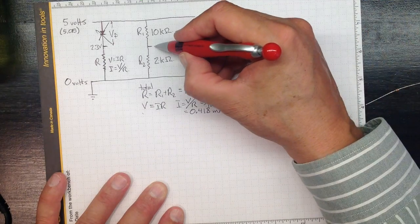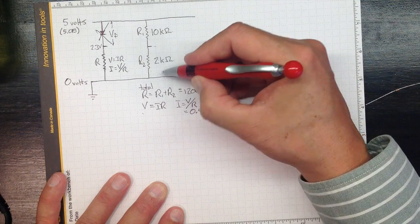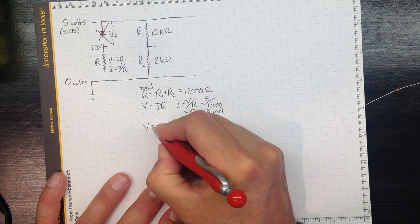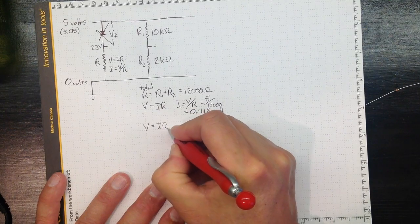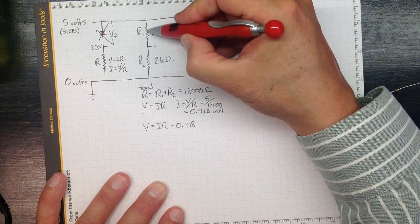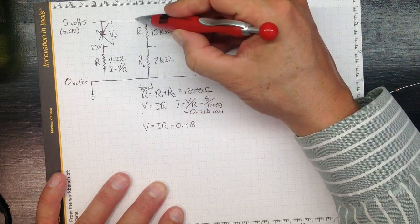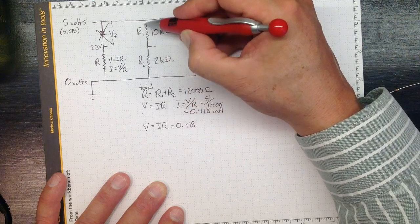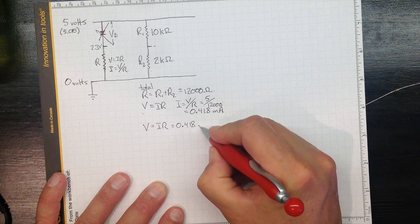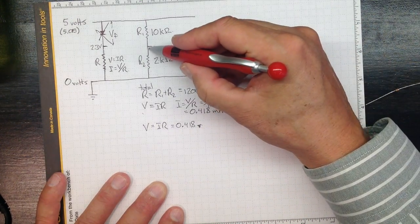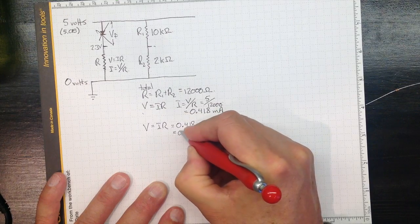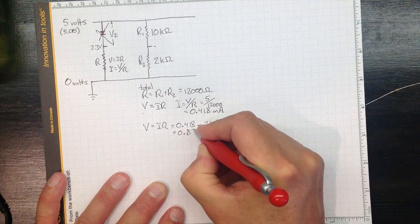So we can then figure out what the voltage ought to be in there. The voltage difference between these two points will also obey V equals IR. If I is 0.418, because the current that flows through here is also the same as the current that flows through the entire combined circuit. So 0.418 milliamps times 2,000 ohms gives me 0.836.